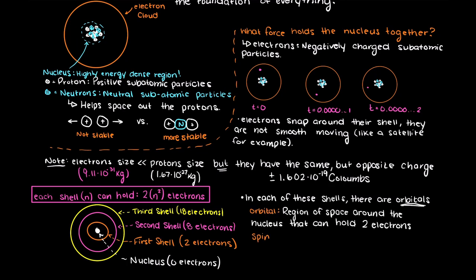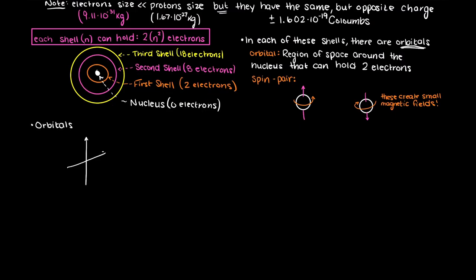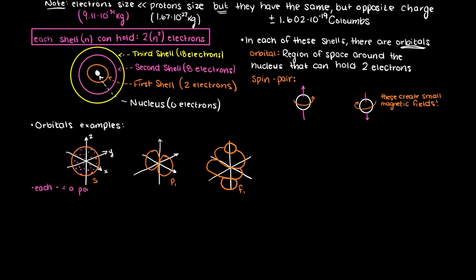Electrons are only allowed in pairs of two per orbital, since they are spin paired, meaning both are spinning in opposite directions. This causes a small but opposite magnetic field. In these various shaped orbitals, we never really are 100% sure where an electron is going to be, because they're just snapping around.